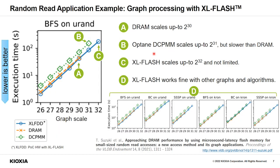This is a random read application example: graph processing with XLFlash. This figure shows the execution time of breadth-first search on various sizes of random graphs using DRAM, Optane DC PMM, and XLFlash. Point A shows DRAM scales up to scale 30, limited by capacity. Optane DC PMM scales up to 31, but slower than DRAM. XLFlash scales up to 32 and capacity is not limited. XLFlash also works well with other graphs and algorithms.